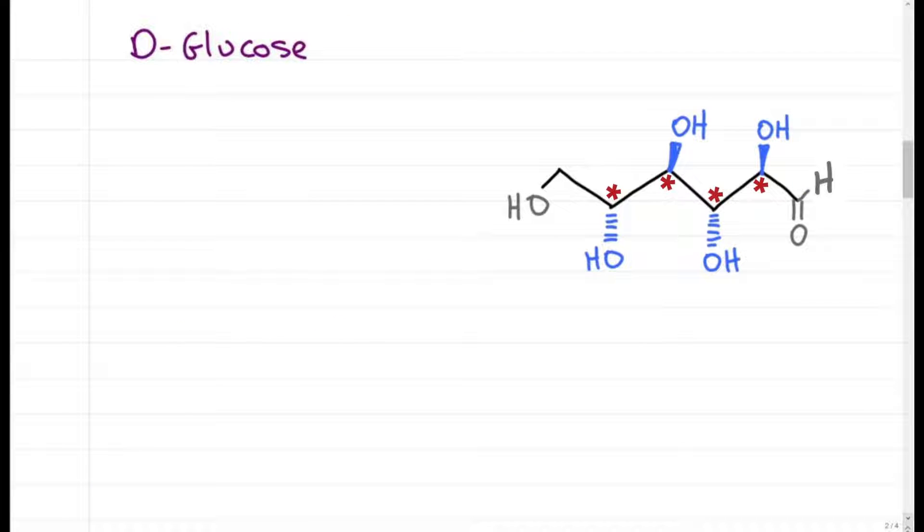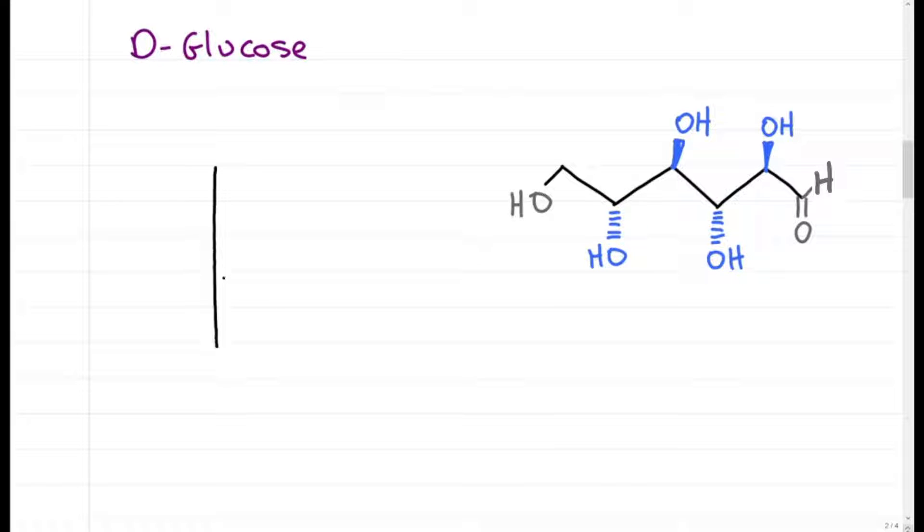Glucose has four chiral carbons. We start with this skeleton and four lines, a carbonyl at the top and an achiral CH2OH at the bottom. Now for the chiral carbons, I remember it as right, left, right.